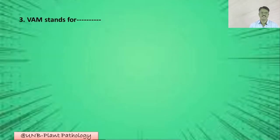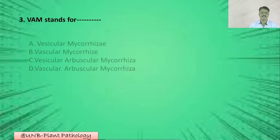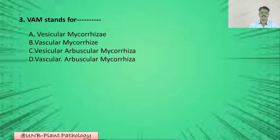Question number three: VAM stands for — A: vesicular mycorrhizae; B: vascular mycorrhizae; C: vesicular arbuscular mycorrhizae; D: vascular mycorrhizae. The correct answer is C: vesicular arbuscular mycorrhizae.